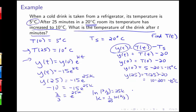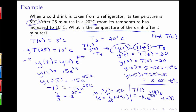Now answering the question about temperature at time t: T(t) equals y(t) plus T_S, which is negative 15 e to the ln(2/3) over 25 times t, plus 20 degrees Celsius. Notice that in this example there are two steps: first find y(t), then substitute back to get T(t) by adding the surrounding temperature.